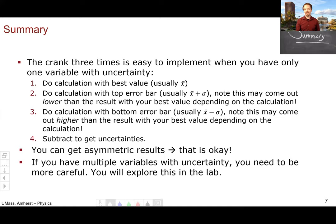In summary, the crank three times method is easy to implement when you only have one variable with uncertainty. You do the calculation with the best value, then you do the calculation with the value at its upper error bar. And note, this may come out lower than the result with your best value, depending upon the formula you're using. Then for the third time, you do the value minus the error bar. And then you subtract three from one and two from one to get your uncertainties.